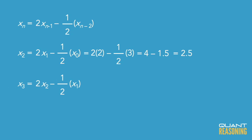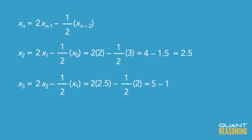Now that we know x2 is two and a half, we can plug that in to solve for x3. So x3 is two times two and a half minus half times the preceding term, which was two. That's five minus one, which is four. So the correct answer is C.